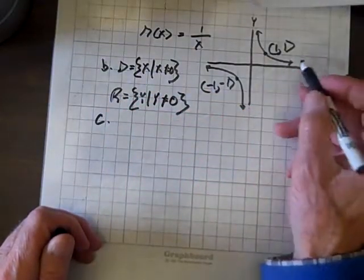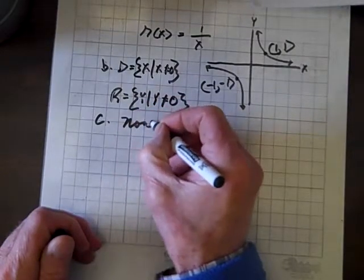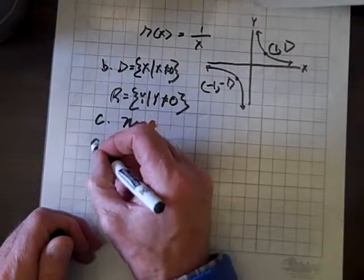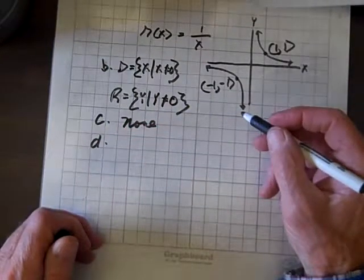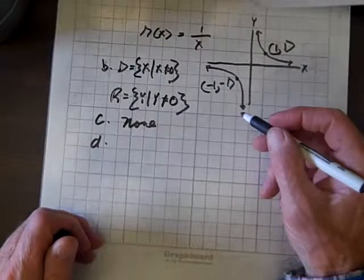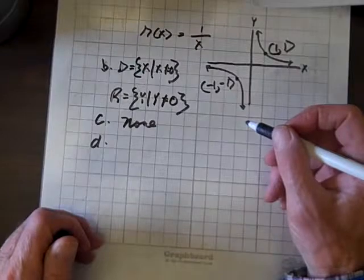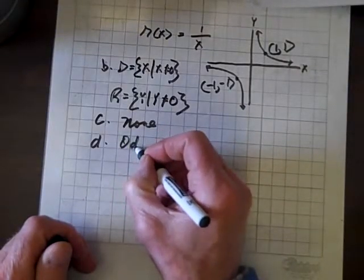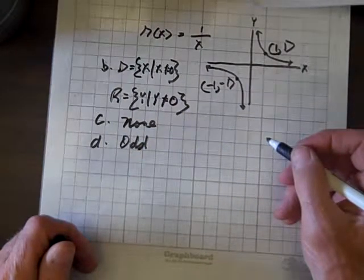The intercepts: clearly, by inspection, there are no intercepts. The next issue: is it odd, even, or neither? Well, this function is odd because it is symmetric about the origin.